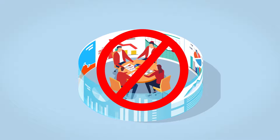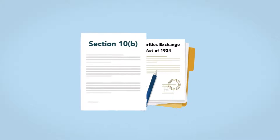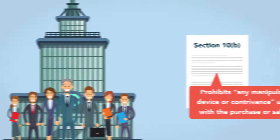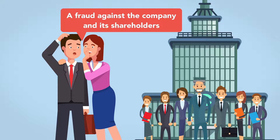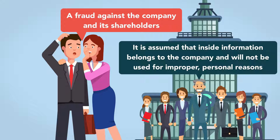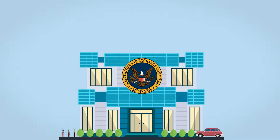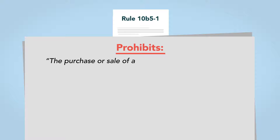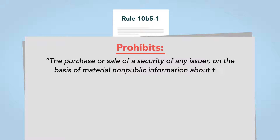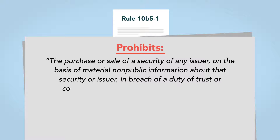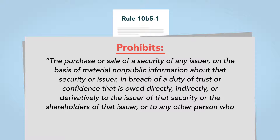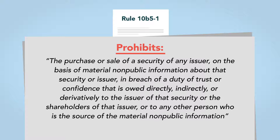The insider trading prohibition flows from the anti-fraud principle embodied in Section 10b of the 1934 Exchange Act, which prohibits any manipulative or deceptive device or contrivance used in connection with the purchase or sale of any security. Trading on inside information operates as a fraud against the company and its shareholders because it is assumed that inside information belongs to the company and will not be used for improper personal reasons. The SEC has promulgated insider trading rules set forth in Rule 10b-5. These rules prohibit the purchase or sale of a security on the basis of material, non-public information about that security or issuer in breach of a duty of trust or confidence owed directly, indirectly, or derivatively to the issuer, the shareholders, or any other person who is the source of the material, non-public information.